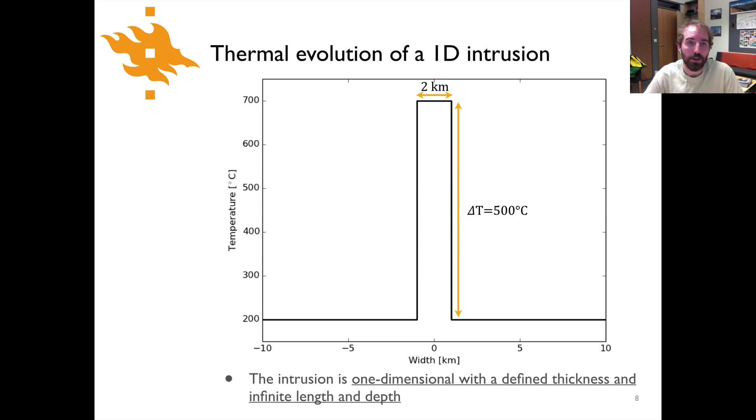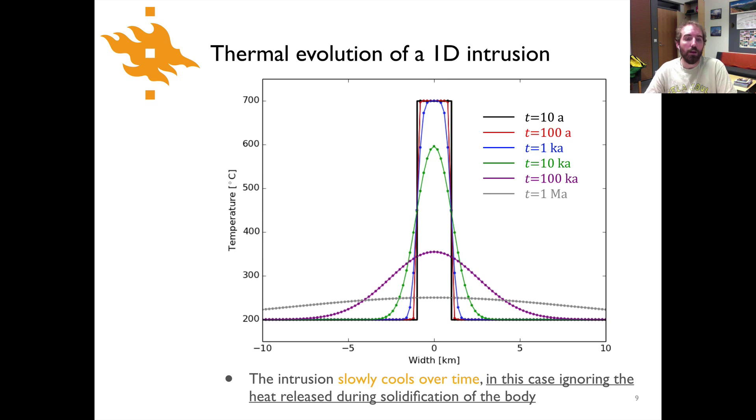Now let's take a look at an example of the thermal evolution of a 1D intrusion. In this case we're considering something like a dike that has a defined thickness and it's infinite in length. So it would be like a planar dike of, in this case, 2 kilometers thickness. We're going to assume that the surrounding rock is all at a constant temperature of 200 degrees. The dike is in place with a temperature of 700 degrees and you can see the width of it here. In this plot we have width along the horizontal axis and the vertical axis is showing temperature. So temperature difference of 500 degrees in this case. What we're going to look at is how the temperature of this intrusion and the surrounding rock changes over time.